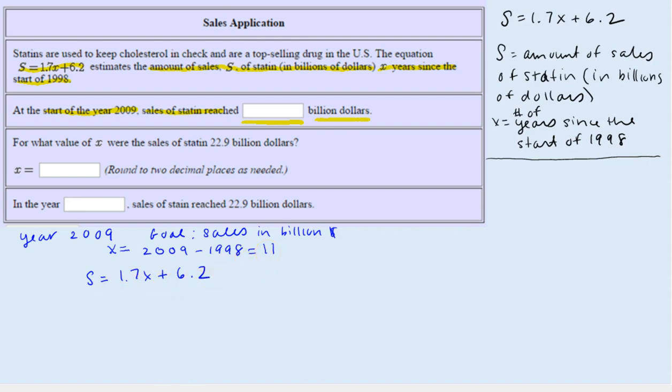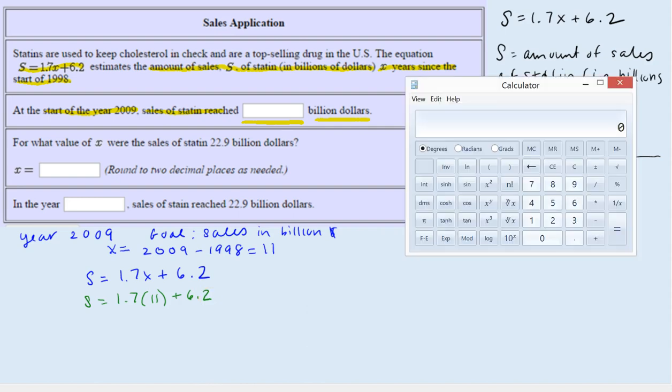The sales equals 1.7, and I'm going to replace X with 11 in parentheses, plus 6.2. Let's evaluate this on the calculator. 1.7 times 11 plus 6.2 gives us 24.9.